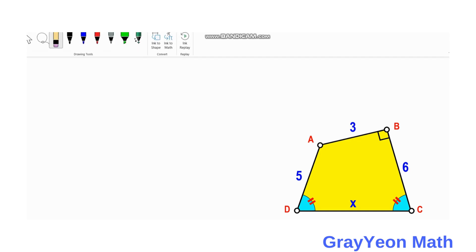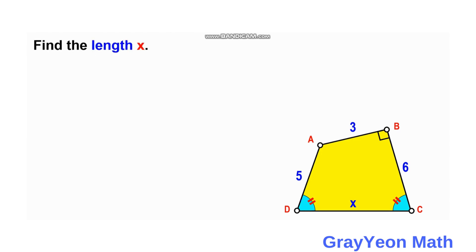Since the two angles at C and D are congruent, we can draw a line upward continuing segment BC, and from point A continuing segment AD, meeting at a new point. This allows us to form an isosceles triangle.